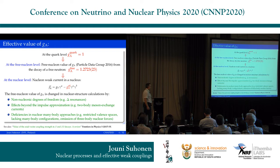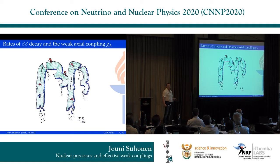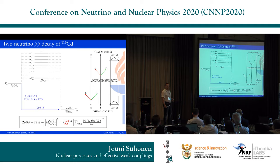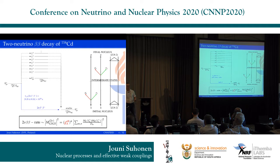So let's go now to the double beta decay nuclear matrix elements, which was the main topic of my talk, and see what is going on there. This is two-neutrino double beta decay of 116 cadmium. As Kai mentioned, there is this axial coupling which is to the fourth power, and it means that it plays a key role — especially for experimentalists. It is a pain in the neck, because your sensitivities very much depend on the value of this coupling.